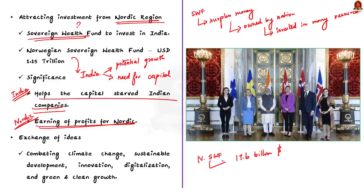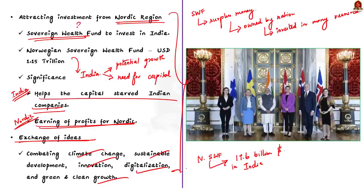Finally, the most important agenda of the summit was the exchange of ideas, with focus areas including combating climate change, sustainable development, innovation, digitalization, and green and clean growth. The Nordic countries have expertise in these fields, and India can learn from their experience to accelerate its growth and ensure economic growth is sustainable and green.